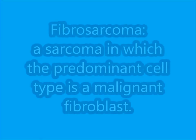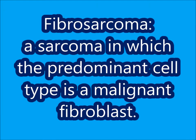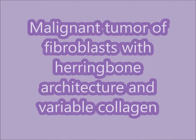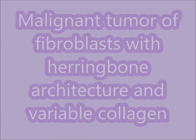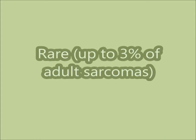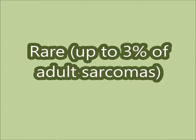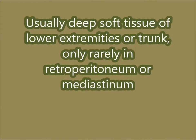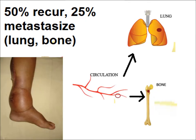Fibrosarcoma is defined as a sarcoma in which the predominant cell type is a malignant fibroblast — a malignant tumor of fibroblasts — with herring bone architecture and variable collagen. It is a rare adult sarcoma, occurring in only up to 3% of patients. It usually arises in the deep soft tissue of the lower extremities or trunk, and only rarely in the retroperitoneum or mediastinum.